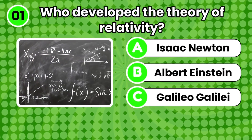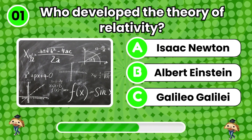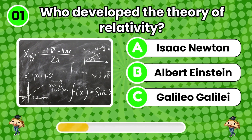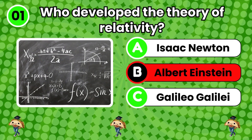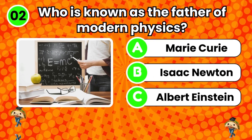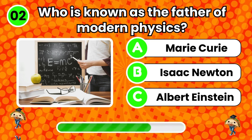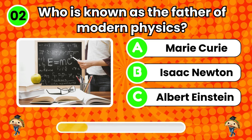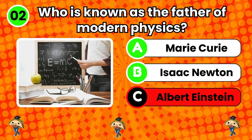Question 1. Who developed the theory of relativity? Albert Einstein. That's right! Next question. Question 2. Who is known as the father of modern physics? Albert Einstein. That's right!